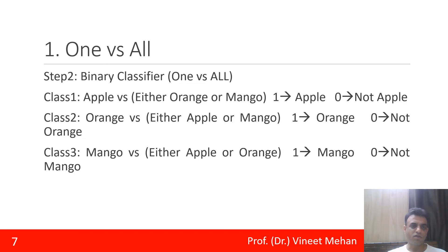Then step number two is binary classifier, one versus all. So for class one, we have apple versus all. All means either orange or mango. So 1 is assigned to apple and 0 is assigned to not apple. Then for class two, we have orange versus all. All means either apple or mango. So 1 is orange and 0 is not orange. Similarly for class three, we have mango versus all, and all is either apple or orange. 1 is mango and 0 is not mango. This is how binary classification is done.